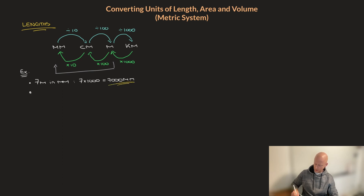Let's look at another example. Say we had to convert 12 centimeters into meters. Well, looking at the diagram, I can see that to get from centimeters to meters, we need to divide by 100. And so we have to do 12 divided by 100, and you can go ahead and check, but that's equal to 0.12. So 12 centimeters is 0.12 meters.